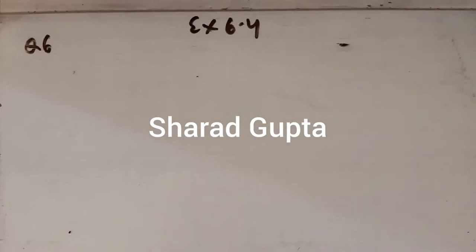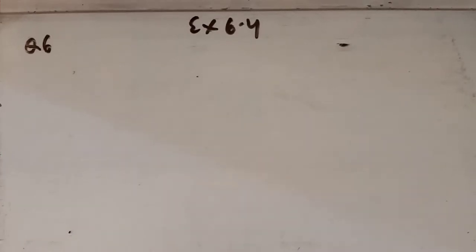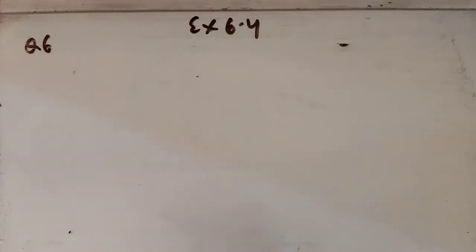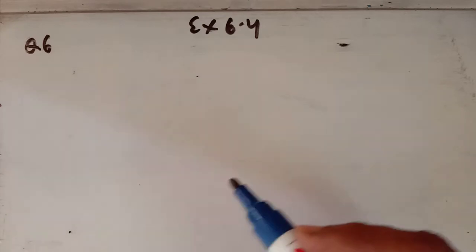Hello, this is lecture number nine for the chapter Triangles for class 10th. We are discussing exercise 6.4. We have done up to question number five in the last lecture. Now in question number six, you have to prove that the ratio of area of similar triangles is equal to the ratio of the corresponding medians.